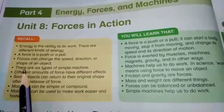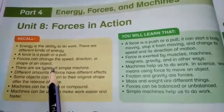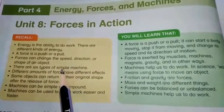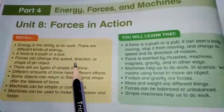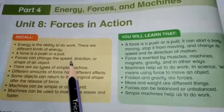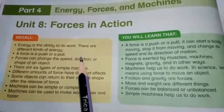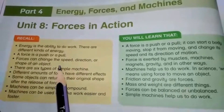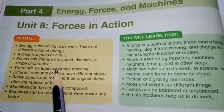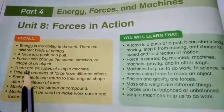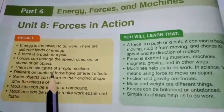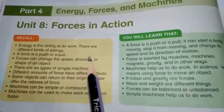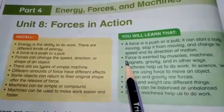There are 6 types of simple machines. For example: wheel and axle, lever, inclined plane, pulley, screw and wedge. These are the 6 types of simple machines that we use in our daily life.